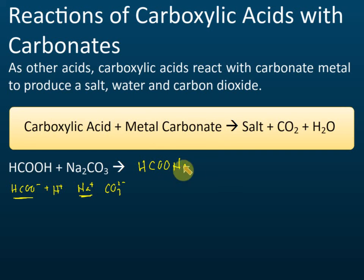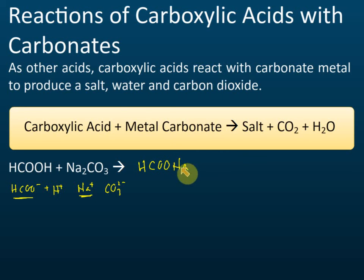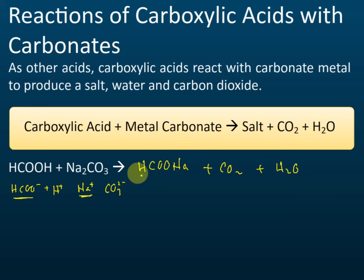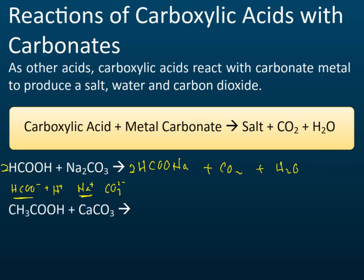Usually we put the positive ion at the back to show that sodium is attached to the oxygens, so we write HCOONa. The products also include carbon dioxide and water. To balance, we need two methanoic acid molecules. Another example: ethanoic acid with calcium carbonate — the salt formed is Ca(CH₃COO)₂, plus carbon dioxide and water, with two ethanoic acid to balance.